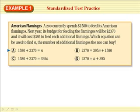The first thing, American flamingos. A zoo currently spends $1,580 to feed its American flamingos. Next year, its budget for feeding the flamingos will be $2,370, and it will cost $395 to feed each additional flamingo. Which equation can be used to find N, the number of additional flamingos the zoo can buy?